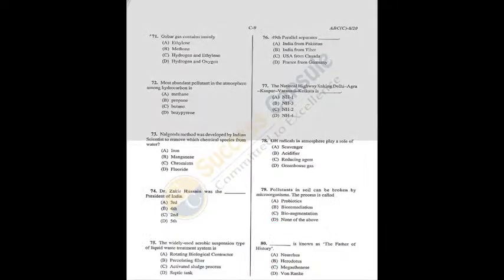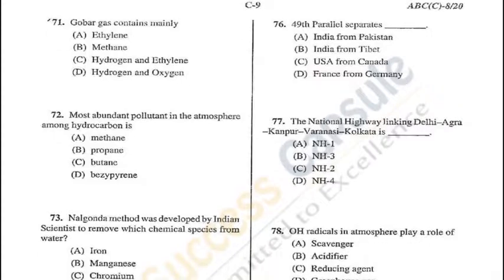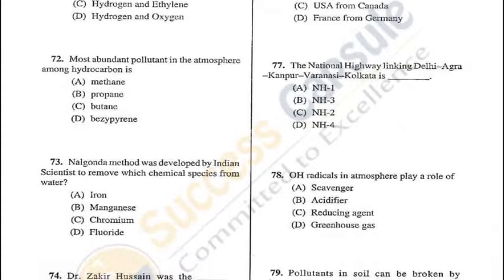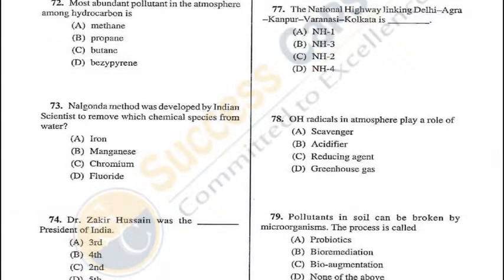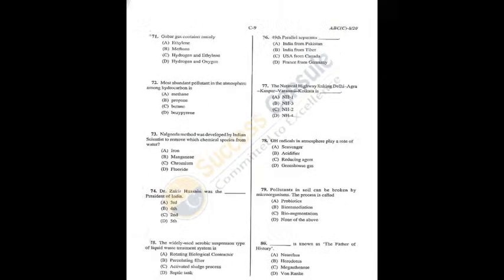Question 71: Gobar gas contains mainly methane — B is the correct answer. Question 72: The most abundant pollutant in atmosphere among hydrocarbons is methane — A is the answer. Question 73: The Nalgonda method was developed by Indian scientists to remove fluoride from water — D is the answer. Q71 and Q72 both have answer A... Q73 = D (fluoride).